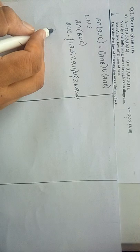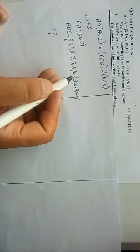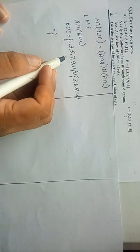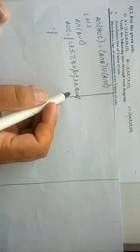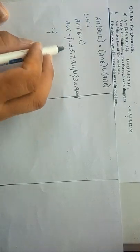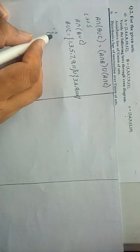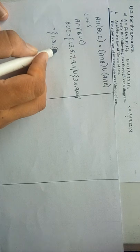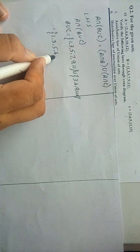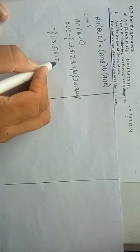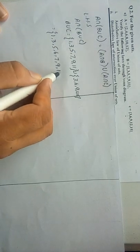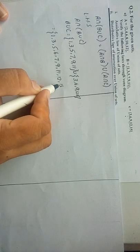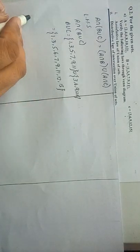The union of these two sets contains all the elements that are present in B or C. So B ∪ C = {1, 3, 5, 6, 7, 9, 11, 12, 15}.